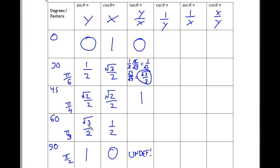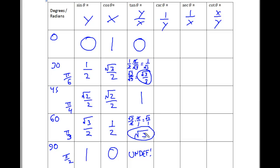For tangent of 60 degrees, we do square root of 3 over 2 divided by 1 half. Skip, flip, and multiply: square root of 3 over 2 times 2 over 1. The 2s cross-simplify, so we have square root of 3 over 1, which we write as square root of 3. That's the tangent of 60 degrees.